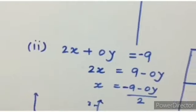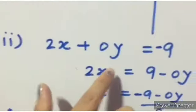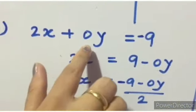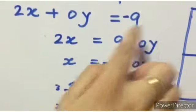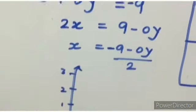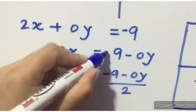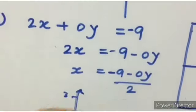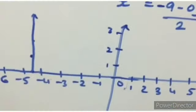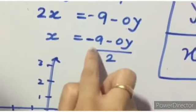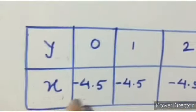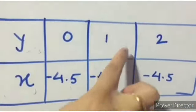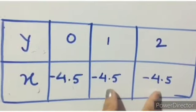But if we have to represent the same in two variables, 2x plus, the y coordinate is not given, so we will take 0y equals minus 9. So 2x equals minus 9, which means x equals minus 9 minus 0y. If we put the values, make a table here. Put 0 here: minus 9 divided by 2 is minus 4.5. And you will put this value. Same answer you will get.